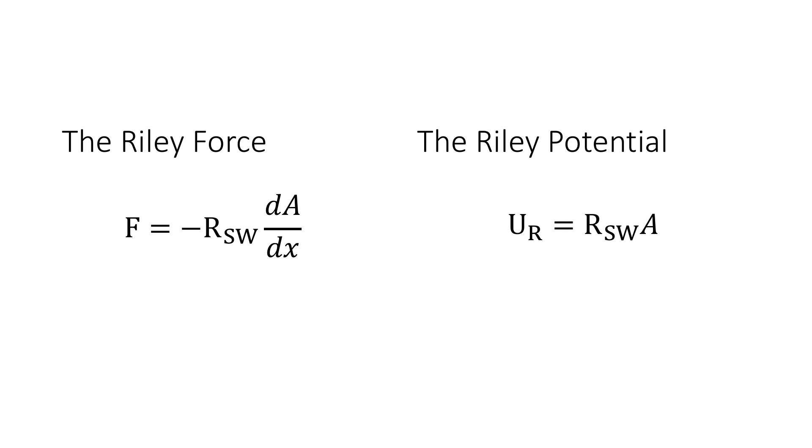Now from here on we will use a one-dimensional case to make it all a bit simpler. So the Riley potential is then equal to the product of the Riley coefficient and the difference in density, and the force is then the negative of the derivative of the potential with respect to x.